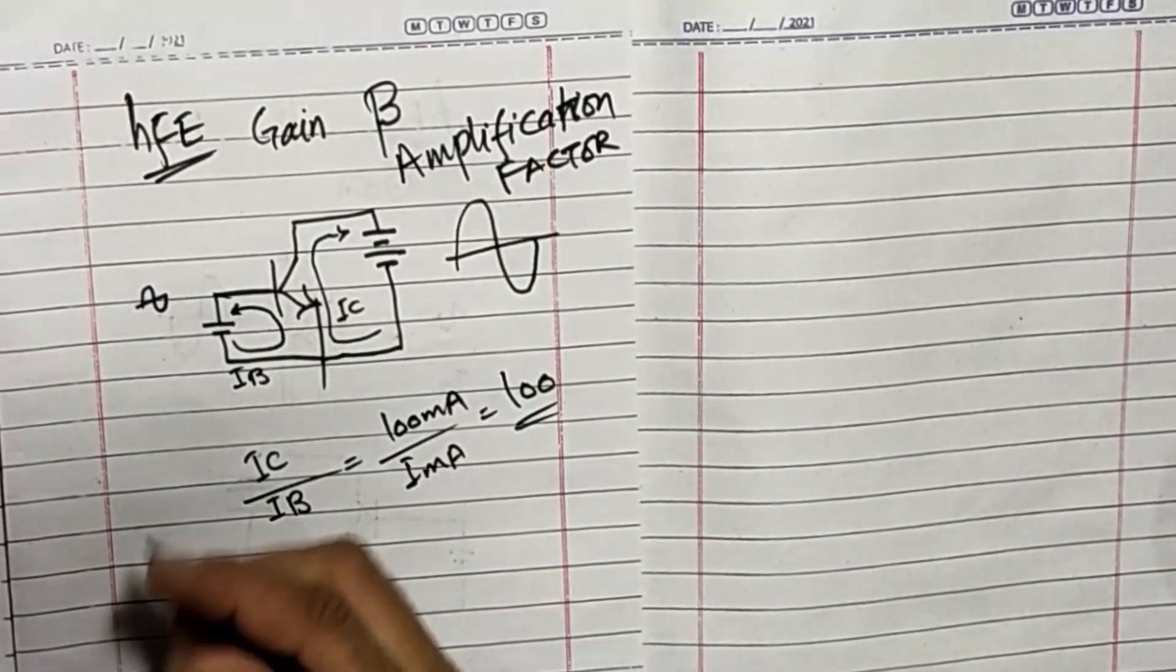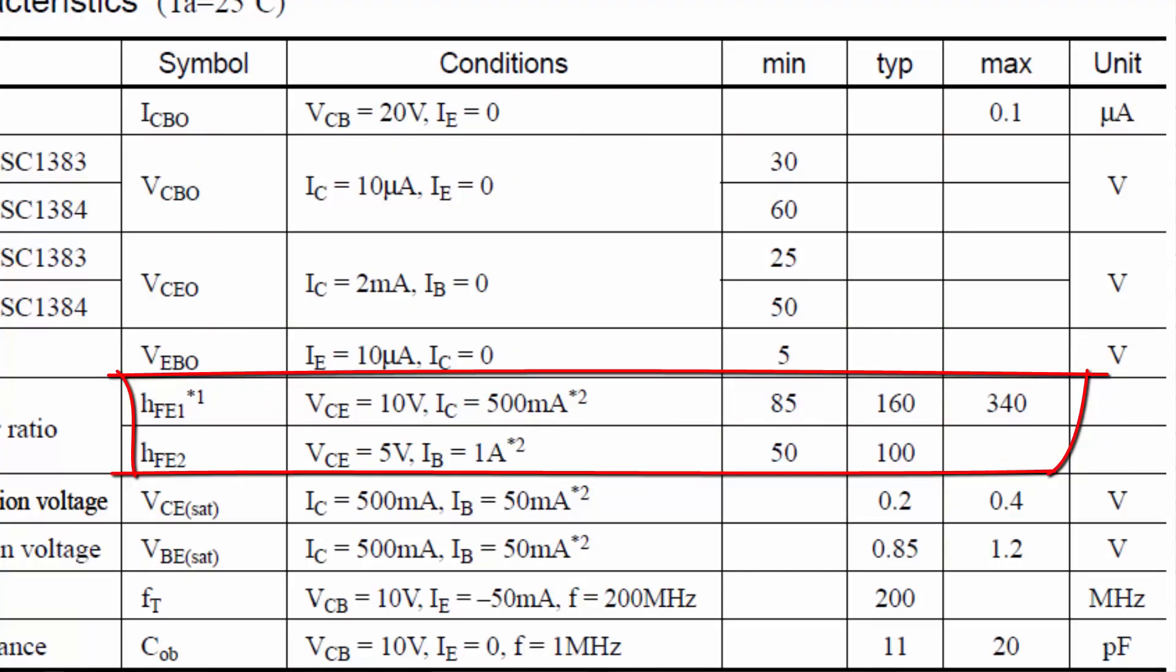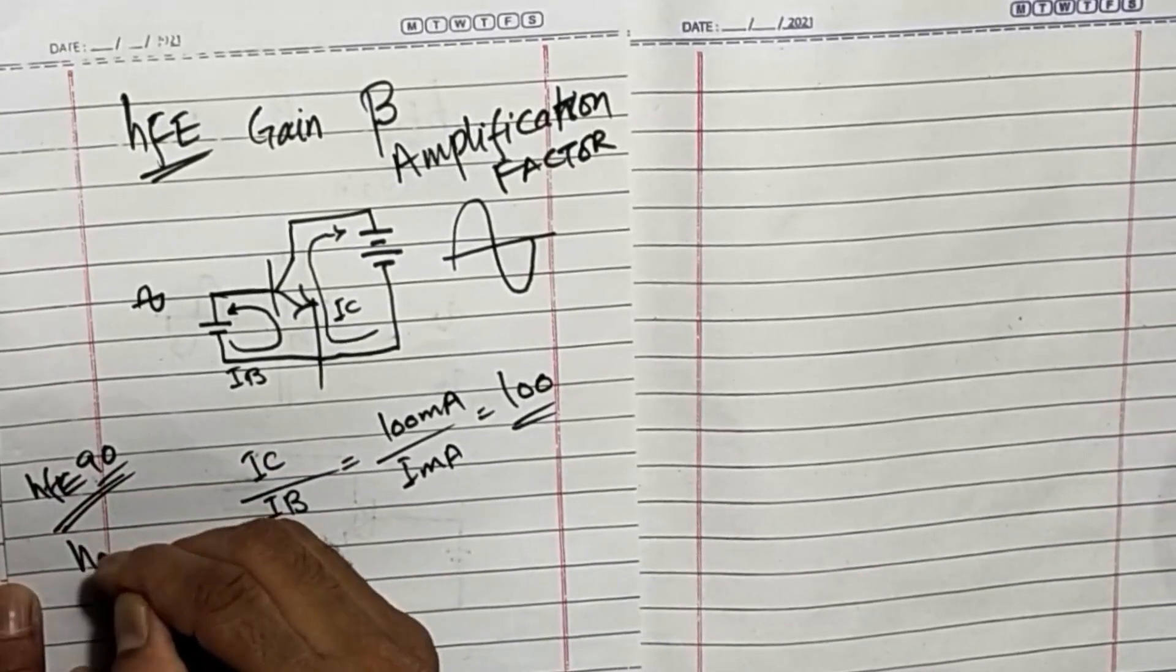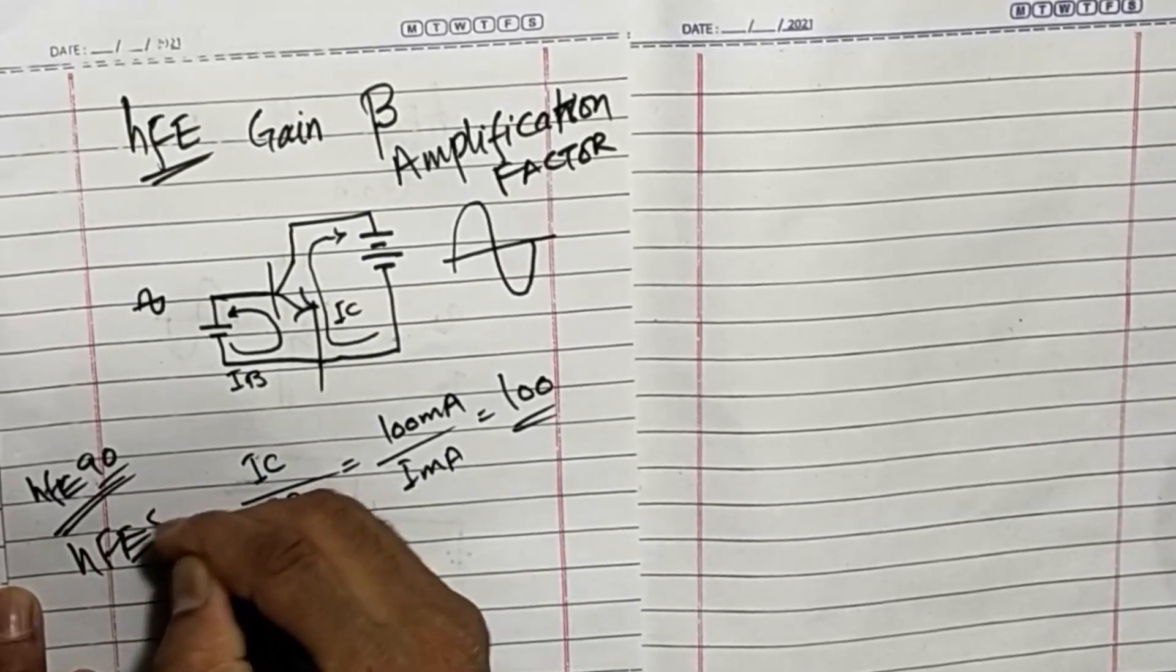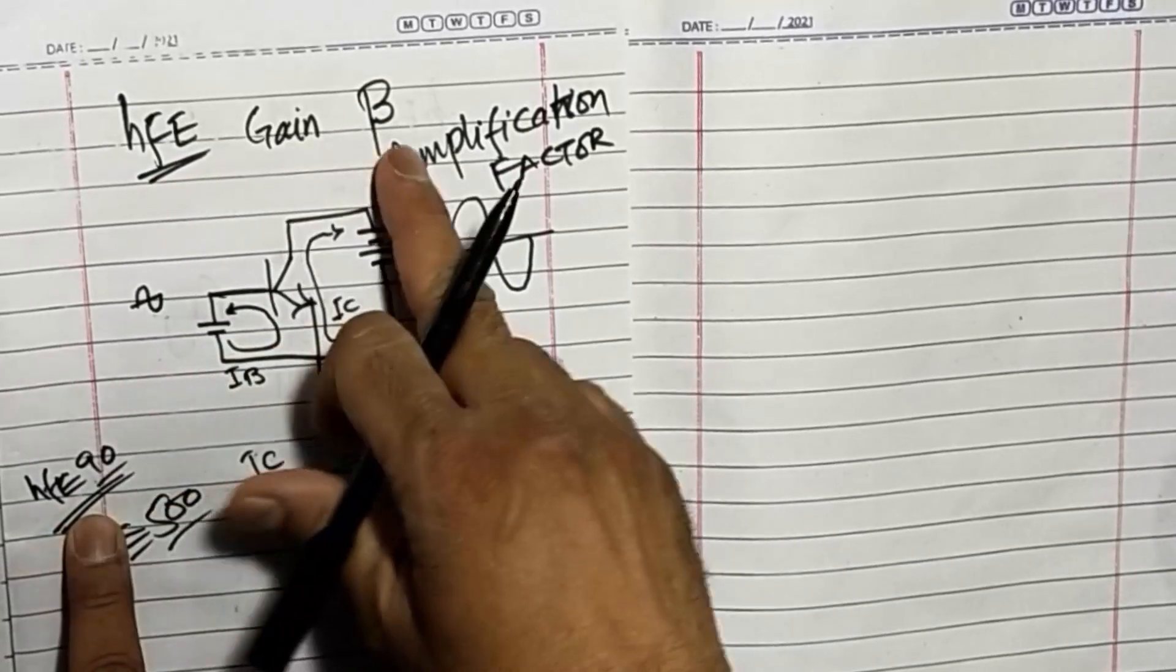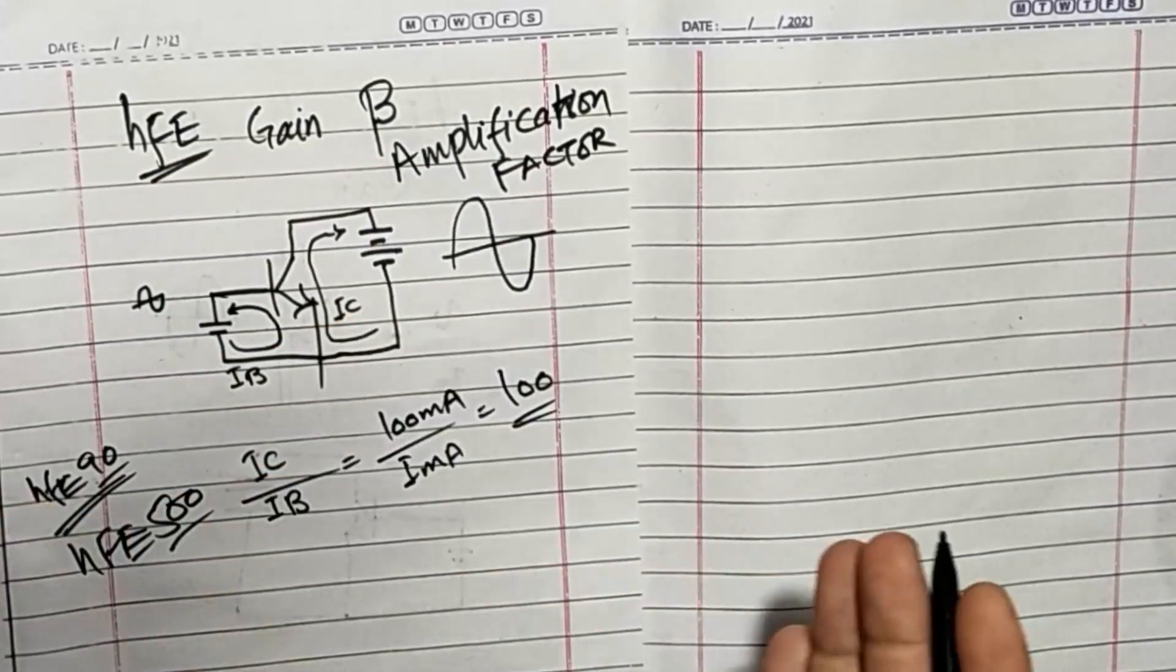When we see a datasheet, we can see a figure hFE 90. Some transistors have hFE 500. Amplification factor gain beta is used to categorize the transistors.